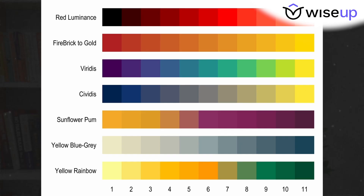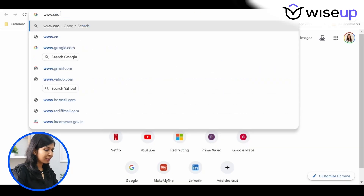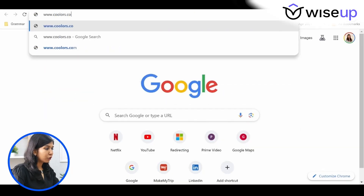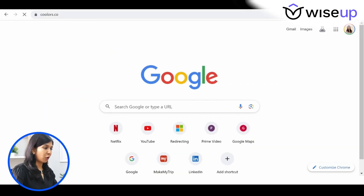Once you know the color codes from the logo, the next step is to generate a color palette using these colors. Ideally your color palette should have three to four colors — if you use more, it becomes too colorful and your presentation won't look as professional. To create a color palette, we'll go to the website coolers.co.